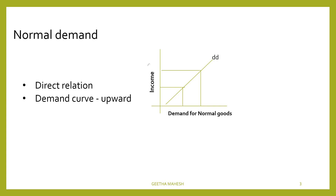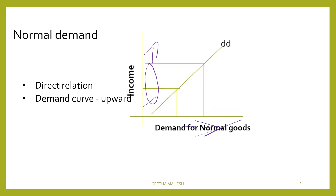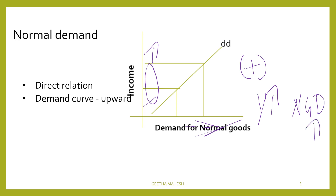You will notice that income increases. There is a positive relationship, or direct relationship, that we can say. Consumer's income increases, and normal goods demand also increases. So demand has a positive slope, that we can say.